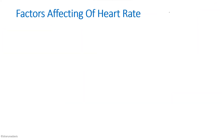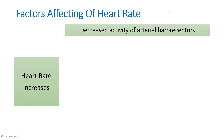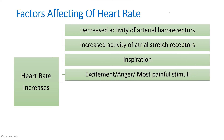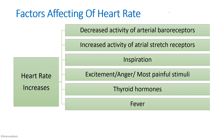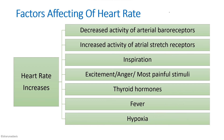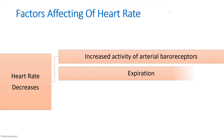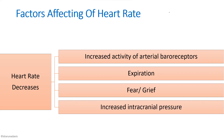The factors affecting heart rate are next. Heart rate increases with decreased activity of arterial baroreceptors, increased activity of atrial stretch receptors during inspiration, emotions like excitement or anger, painful stimuli, increased thyroid hormones, fever, hypoxia, and exercise. Heart rate decreases with increased activity of arterial baroreceptors, during expiration, emotions like fear and grief, and increased intracranial pressure.